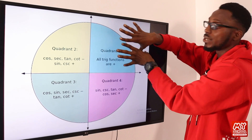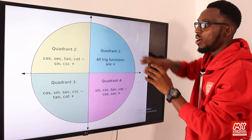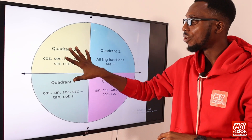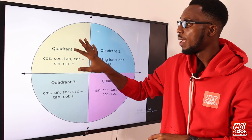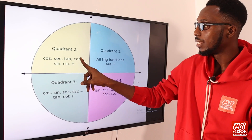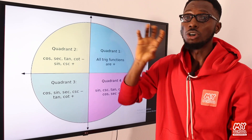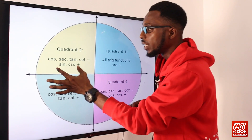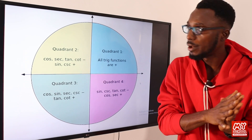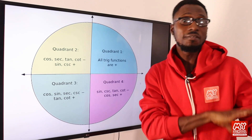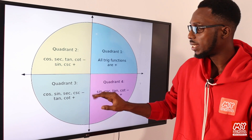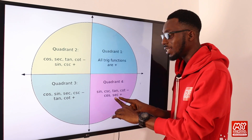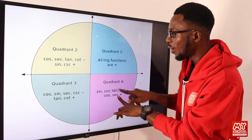In the first quadrant, we have positive x-axis and positive y-axis, so everything is positive. In the second quadrant, which spans from 90 to 180 degrees, only sine and its inverse are positive — every other function is negative. In the third quadrant, only tangent and its inverse, cotangent, are positive — every other expression is negative. In the fourth quadrant, only cosine and its inverse are positive — every other thing is negative.